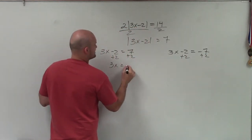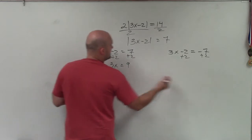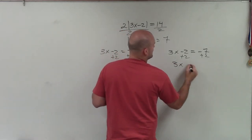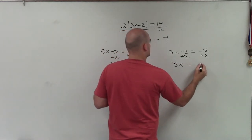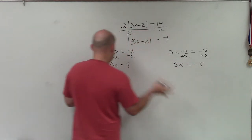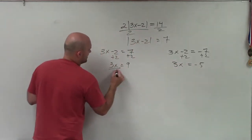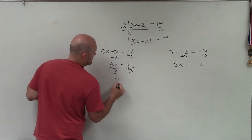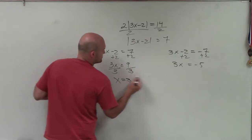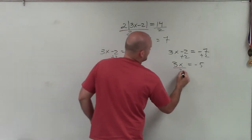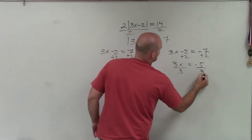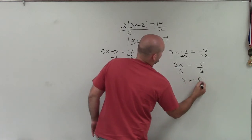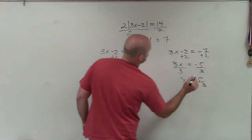That gives me 3x equals 9, and 3x equals negative 5. Now I solve for x by dividing by 3 on both sides: x equals 3, and x equals negative 5 thirds.